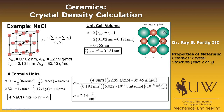Substituting everything into the density equation: 4 formula units, the weight of Na⁺ plus the weight of Cl⁻, divided by the unit cell volume and Avogadro's number (6.022 × 10²³ per mole), with a conversion factor from cubic nanometers to cubic centimeters, gives a density of 2.14 g/cm³ — which is very close to the actual measured value of sodium chloride.